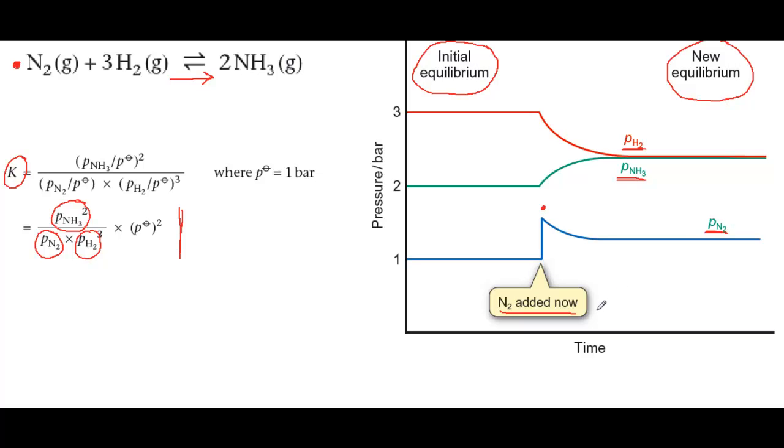This discussion in terms of K gives us a more sophisticated understanding of what is going on than simply saying the equilibrium moves to the right.